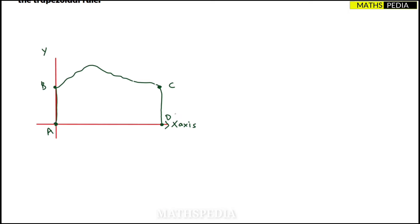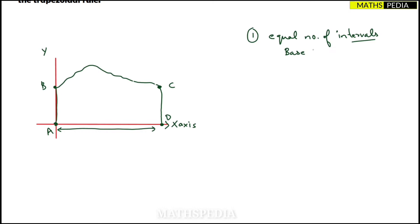We have to find the area of the irregular figure ABCD. The first step in the trapezoidal rule is that you have to divide the base — here it is AD — into an equal number of intervals having equal width. We will name this equal width as small d.